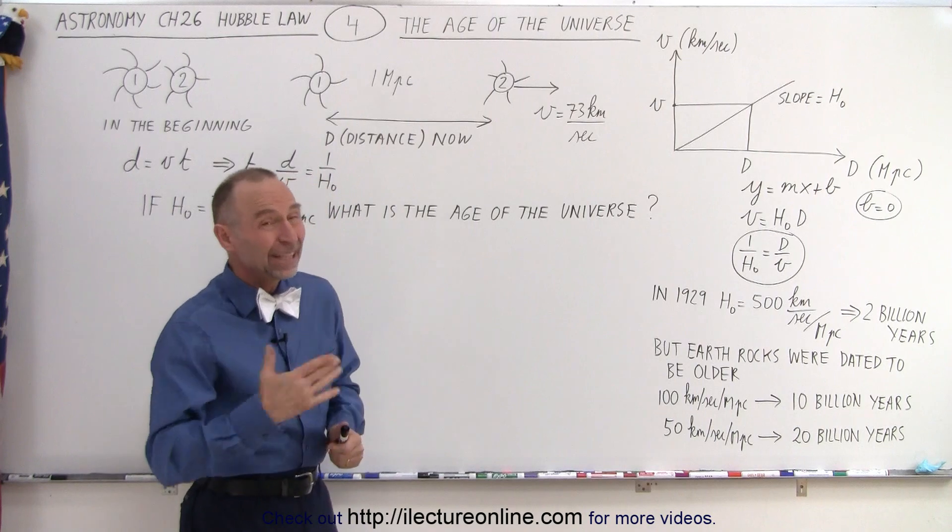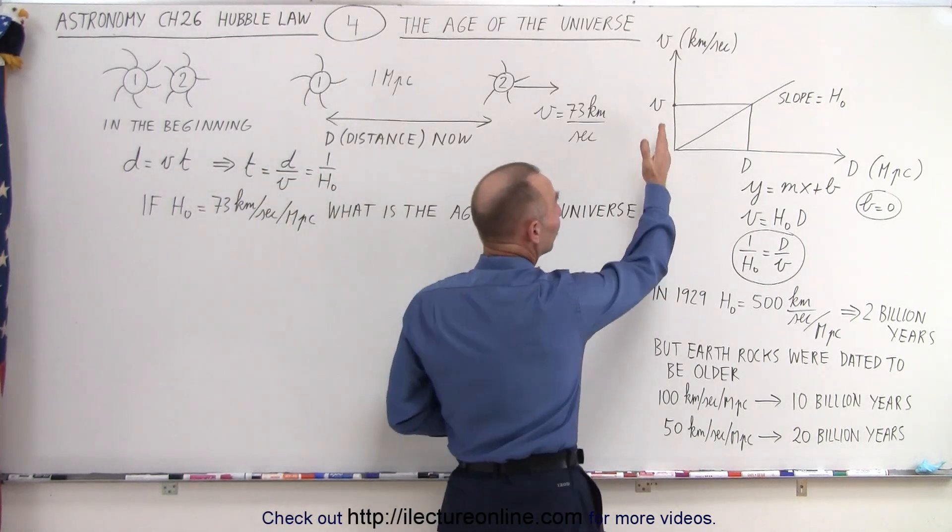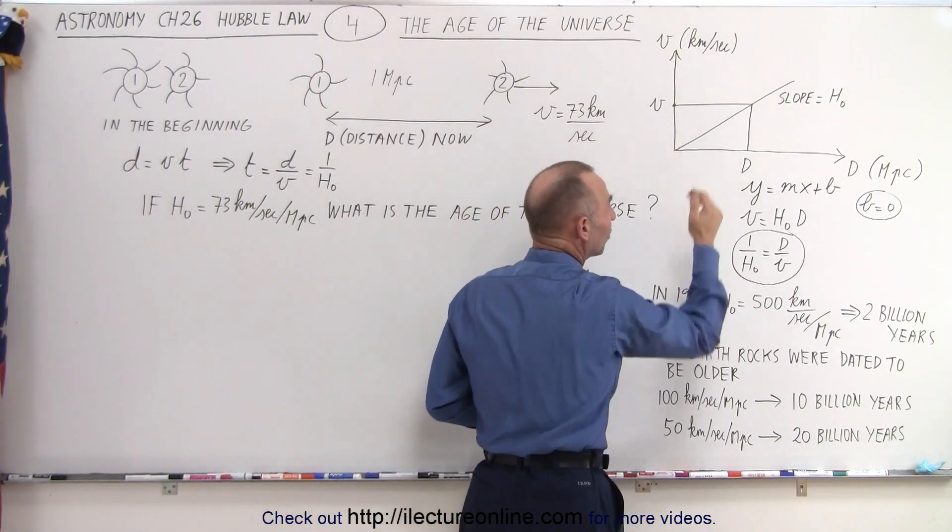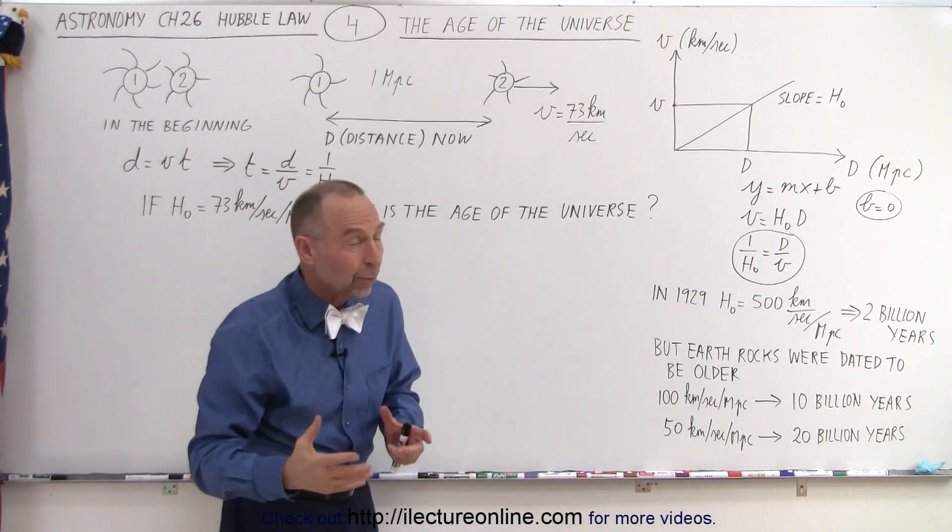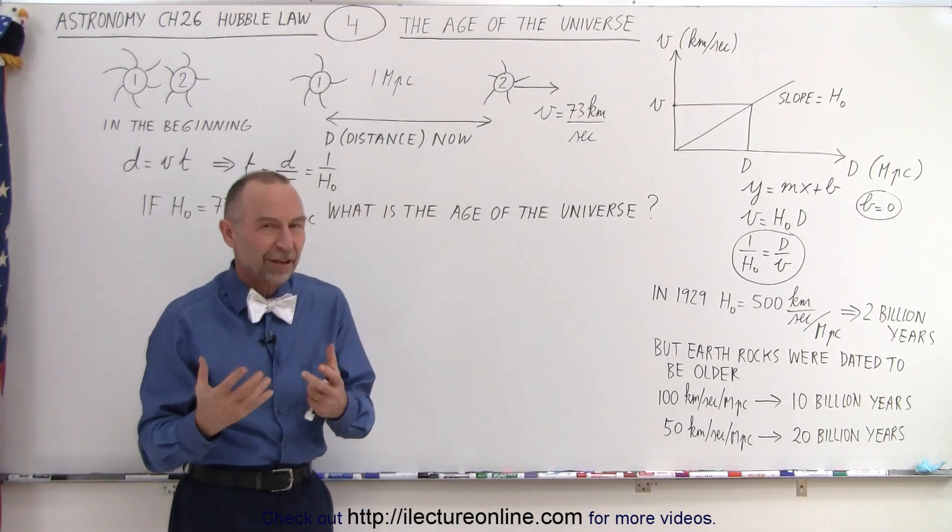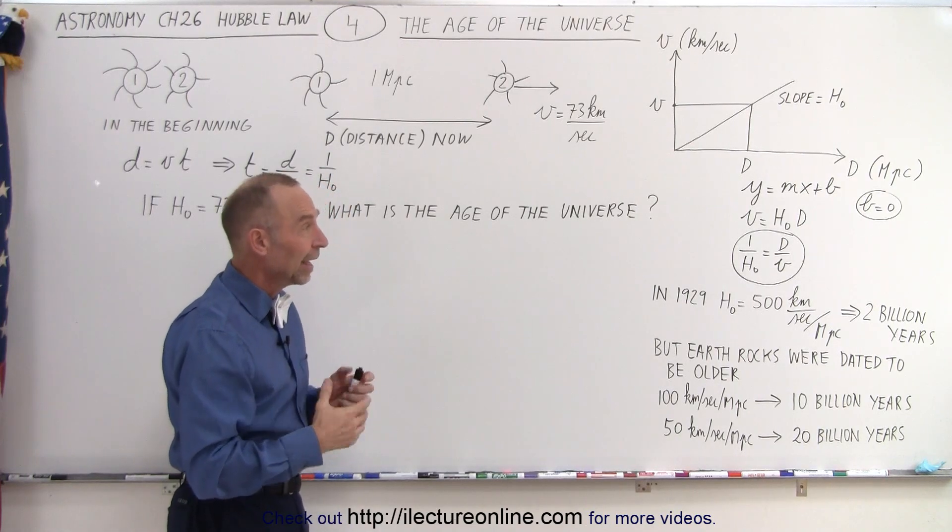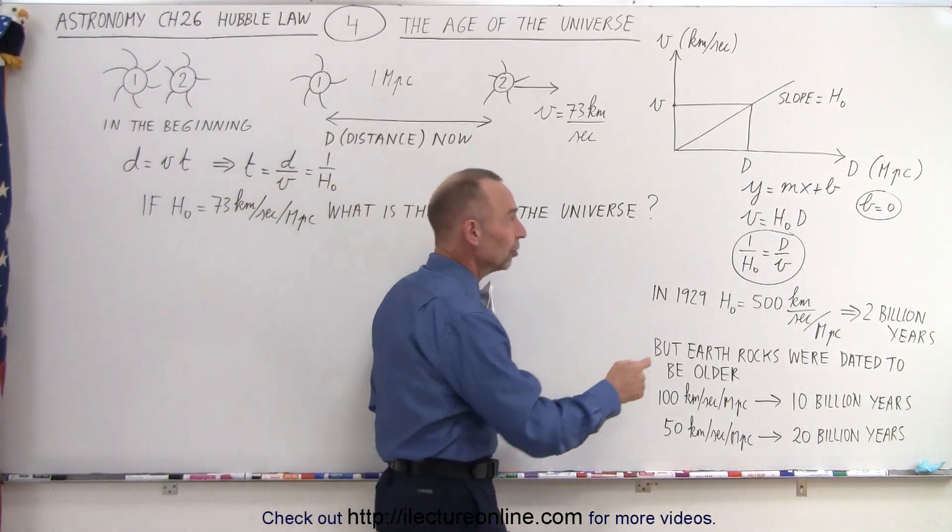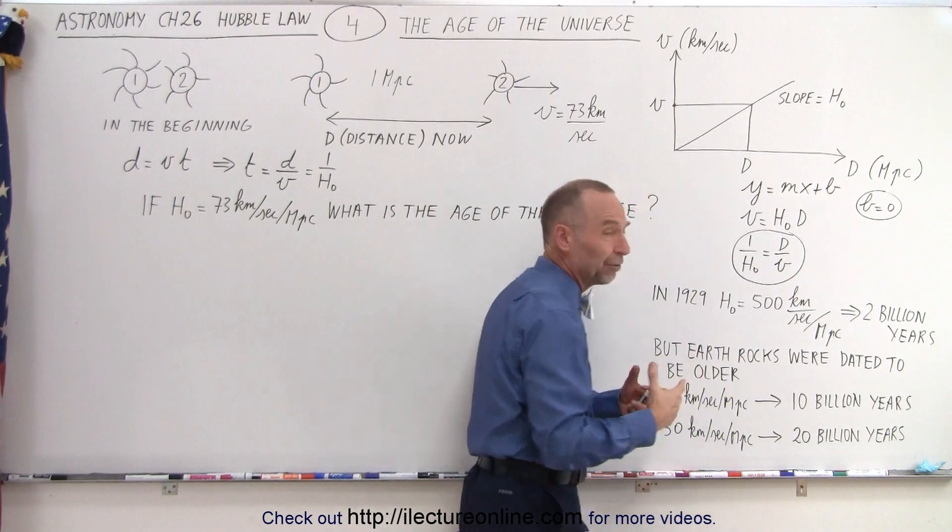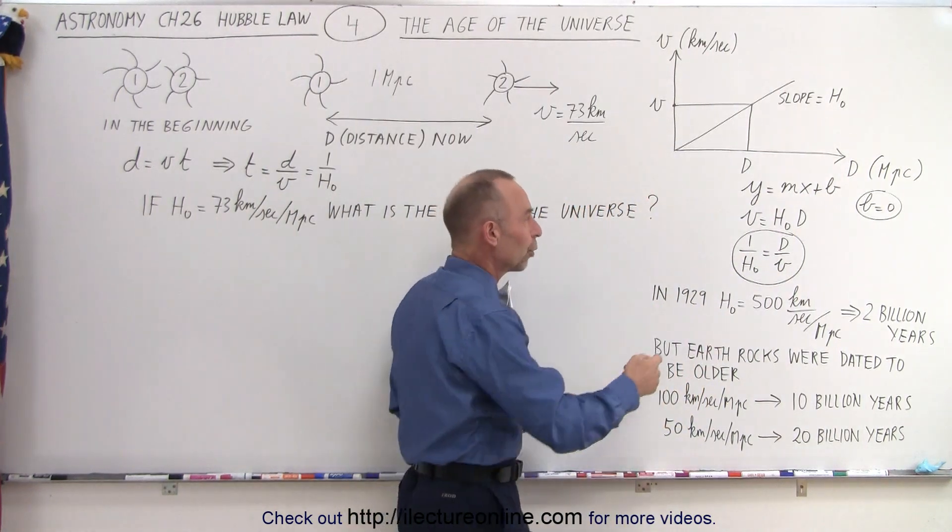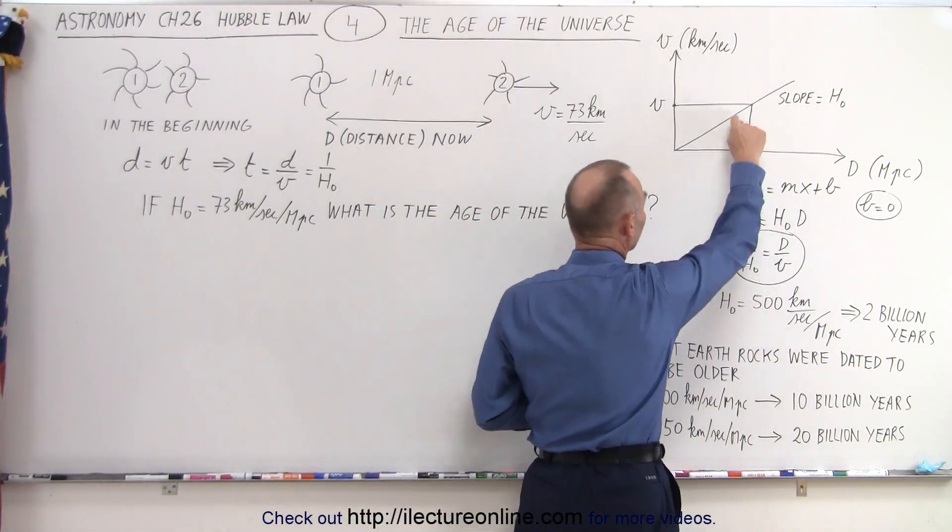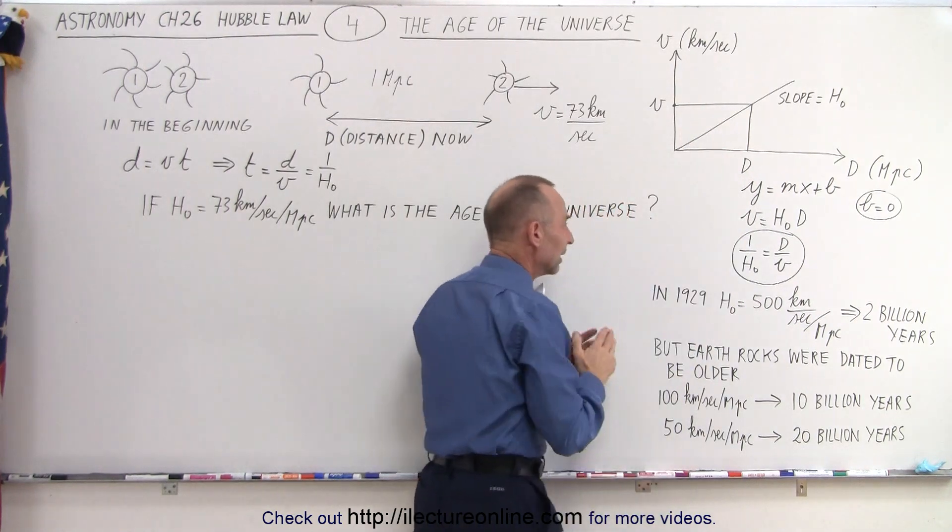Hubble discovered a linear relationship between the recessional velocities and the distance to the galaxies that he was measuring. He was using Cepheid variables to calibrate the distance to those galaxies. When we look at the equation y equals mx plus b that we're familiar with in algebra, the b becomes equal to zero when the line crosses the origin.